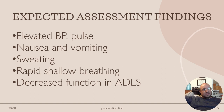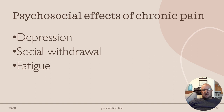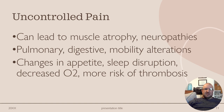Expected assessment findings include elevated blood pressure and pulse, which are objective findings, as well as nausea, vomiting, sweating, rapid shallow breathing, and decreased function in activities of daily living. Psychological effects include depression, social withdrawal, and fatigue. Uncontrolled pain can lead to atrophy or neuropathies with numbness and tingling, alterations in pulmonary, digestive, and mobility areas, changes in appetite, sleep disruptions, decreased CO2, and increased risk of thrombosis due to reduced mobility.